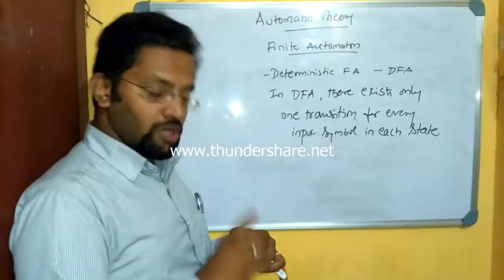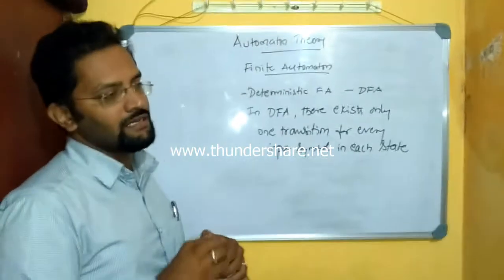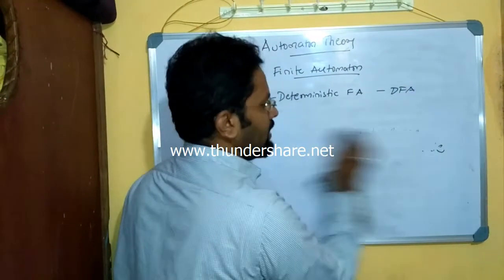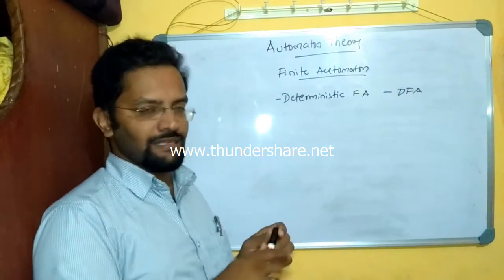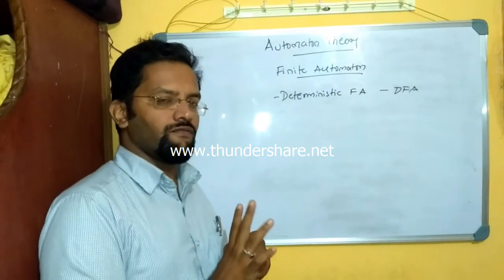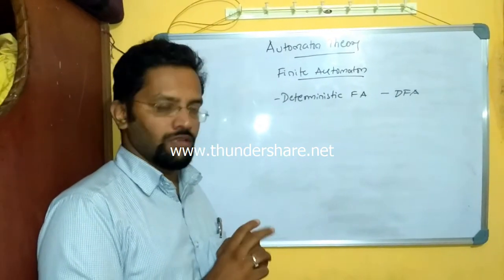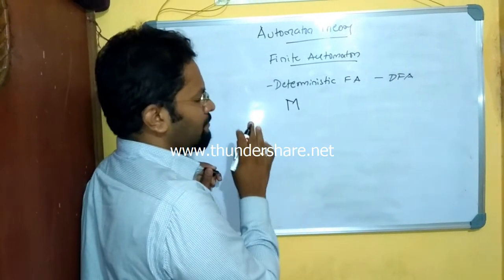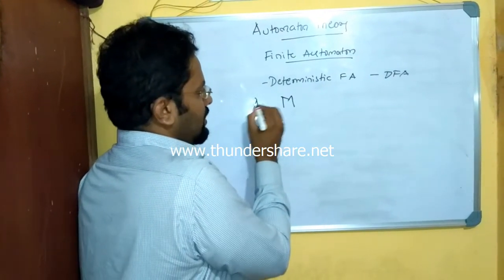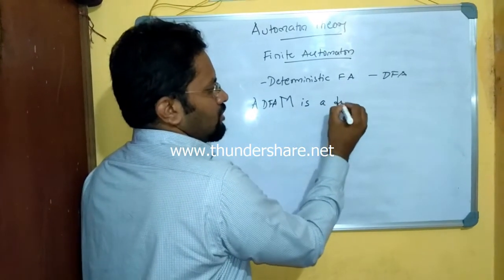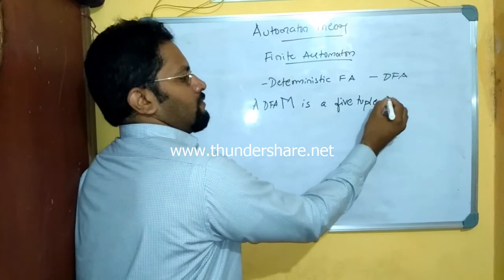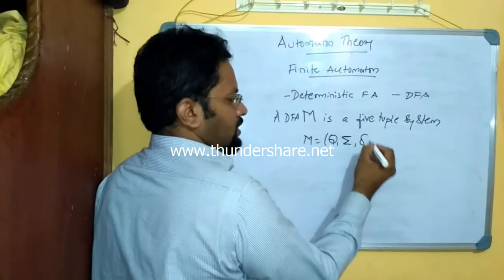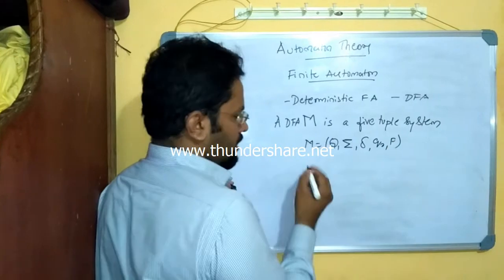That is because DFA is deterministic and the path is well defined. Keeping this in mind, we formally define the DFA. In this course we focus on formal definitions. When I denote M as a DFA, I say a DFA M is a five-tuple system, written as M equals Q, sigma, delta, q0, and F.